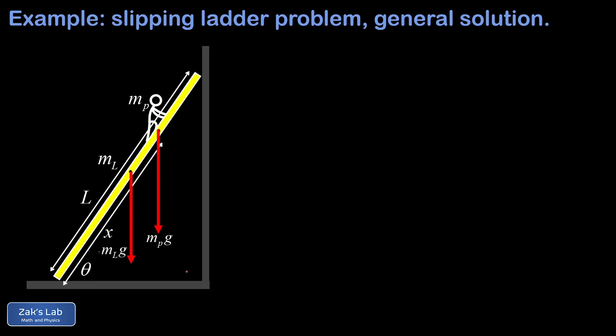The wall is smooth — frictionless — so it can only exert a normal force, which we call N_W, the normal force exerted by the wall. At the contact point with the floor there is a normal force N_F pointing straight upward. Finally, there is a friction force at the floor contact point. Since N_W is the only other horizontal force and it points left, the friction force must point right to hold the ladder in place. At the breakaway point, static friction is maxed out, so it equals mu_s times N_F.